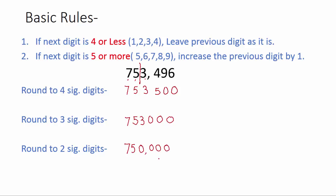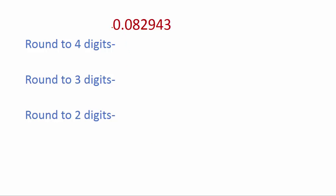Let's take another example — this is a smaller number. We have to round this number up to four significant digits. You can see these two zeros are not significant; only eight, two, nine, four, three are significant digits. First, second, third, and fourth — we have to round up to four. The next digit is three, which is less than four, so we keep four as it is. After the decimal, we don't turn other digits to zero.